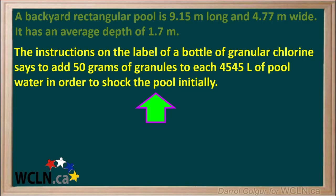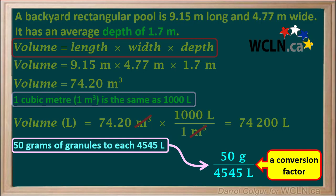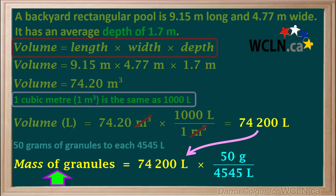We were told earlier that we need to add 50 grams of granules to each 4,545 liters of pool water in order to shock the pool initially, so we'll make a note of that here. We'll use this to create a conversion factor: 50 grams per 4,545 liters. To find the mass of granules we need, we'll take our volume of 74,200 liters and multiply it by the conversion factor 50 grams per 4,545 liters.